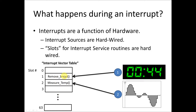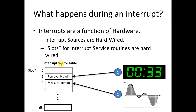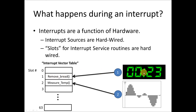We call this collection of slots the interrupt vector table — a table of interrupt vectors, or function addresses, that get executed whenever the associated entry in the table is activated. So whenever the interrupt source is activated, the system looks up what function should be executed, executes that function, and everything's handled.